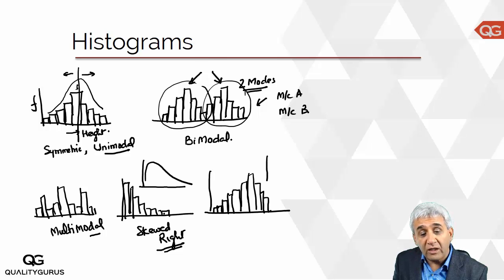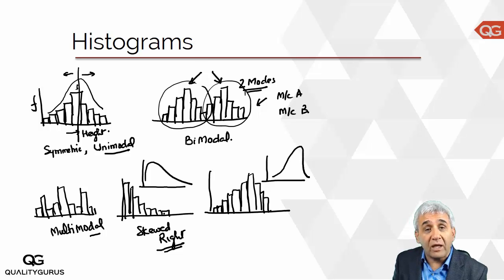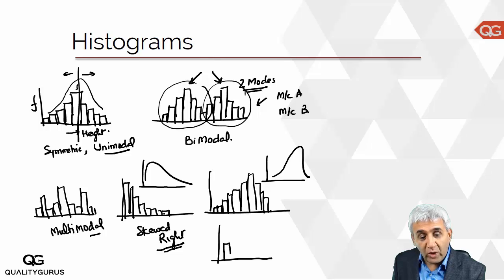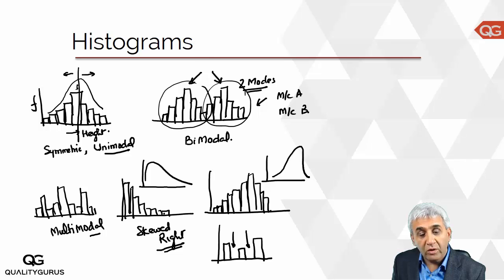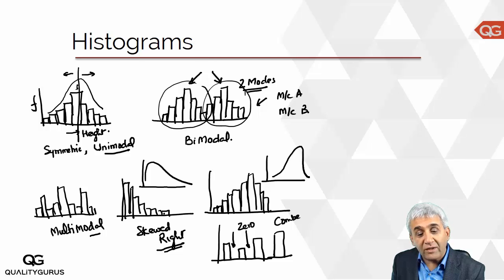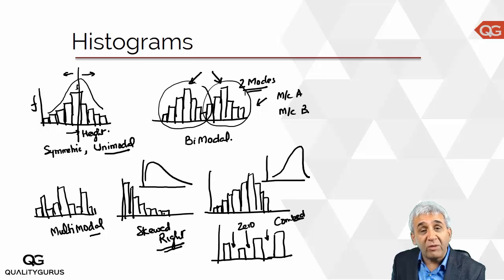Another shape is the combed histogram, which has a gap between bars — some bars present, then nothing in the middle, then more bars. This pattern resembles combing — alternate bars at zero. This can happen due to rounding off, where someone is not recording certain values, leading to these gaps in the histogram.